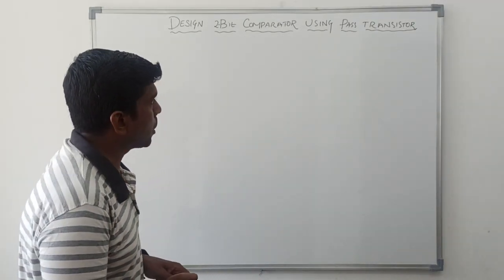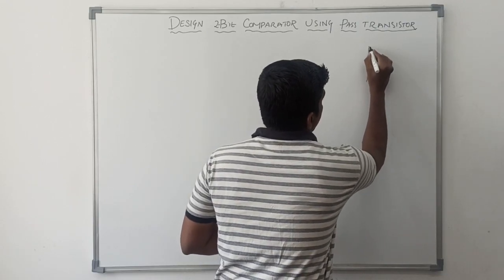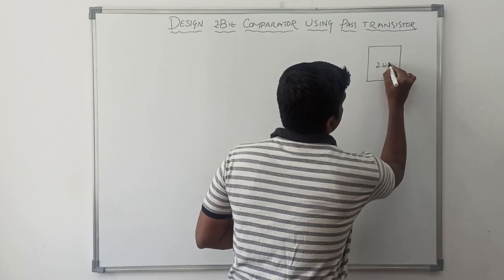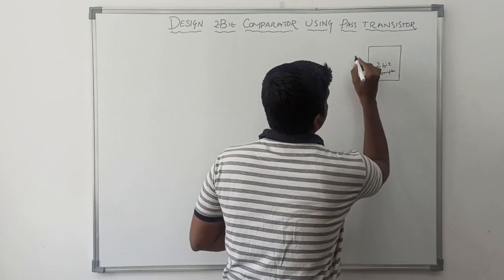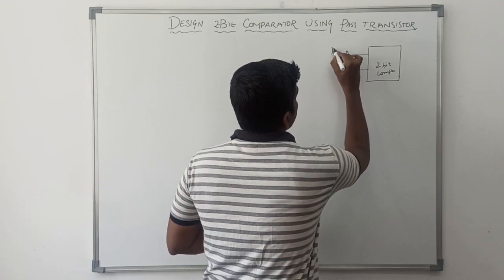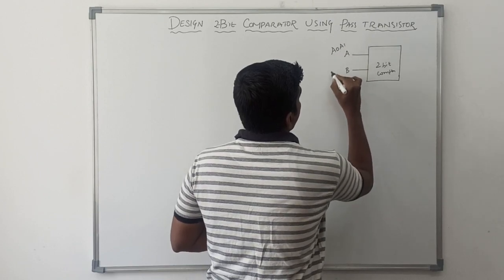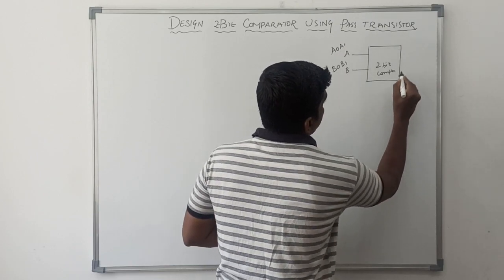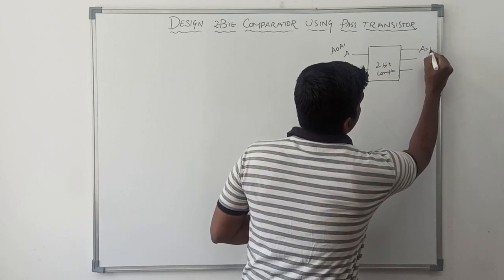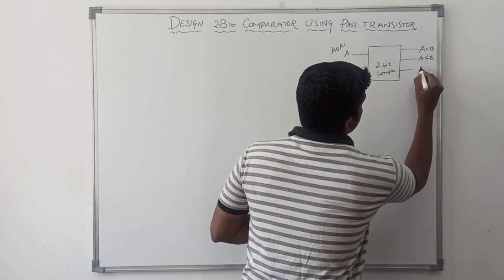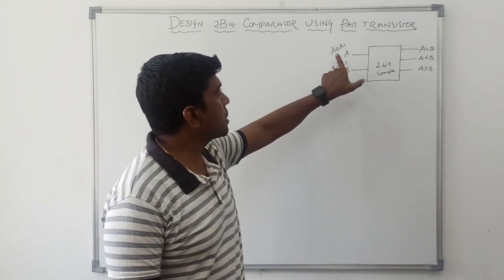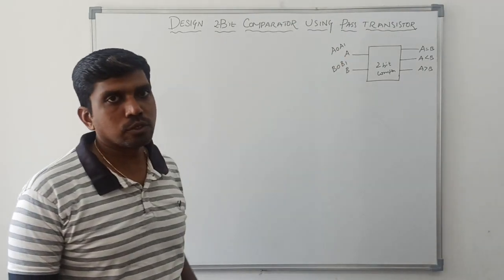First I will draw the block diagram of a two-bit comparator. It is a two-bit comparator with inputs A and B. A refers to A0 and A1; B refers to B0 and B1. This comparator produces three outputs: A equal to B, A less than B, and A greater than B. The input is A0, A1 and B0, B1 — two-bit values.